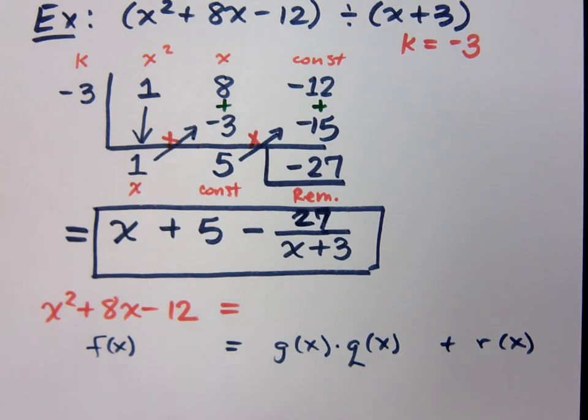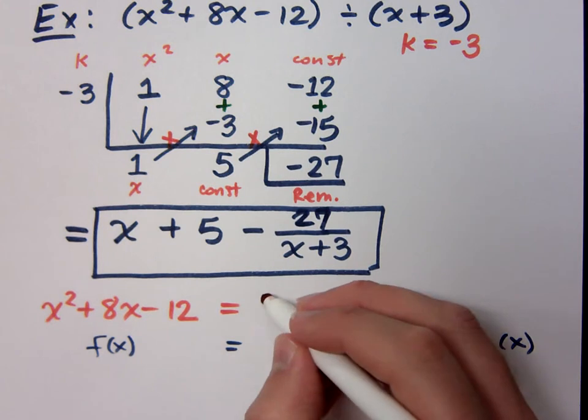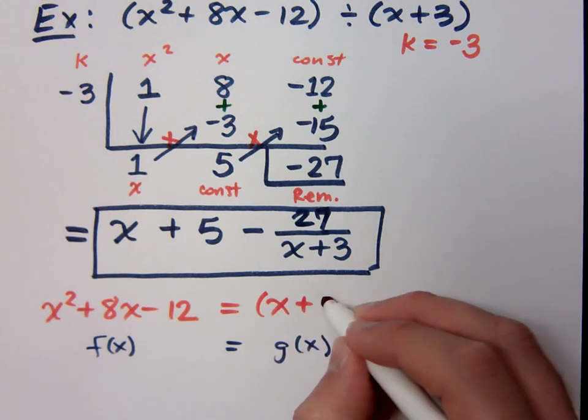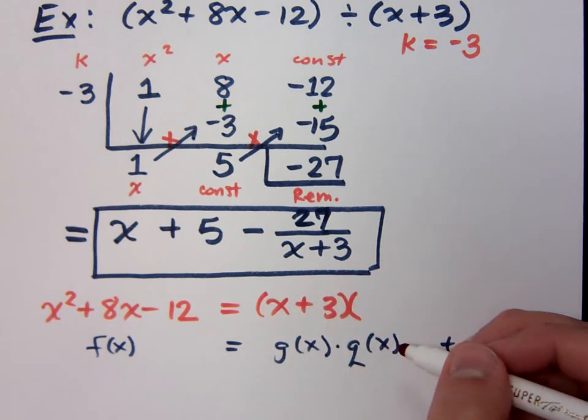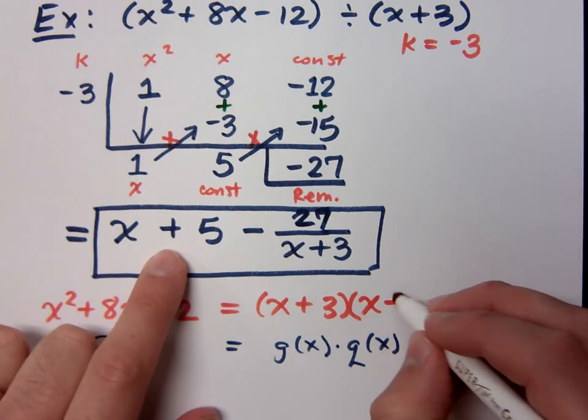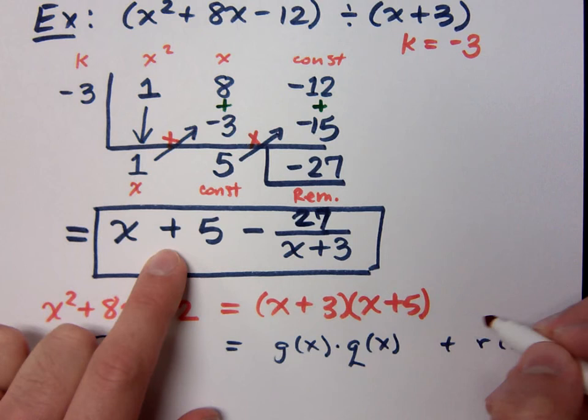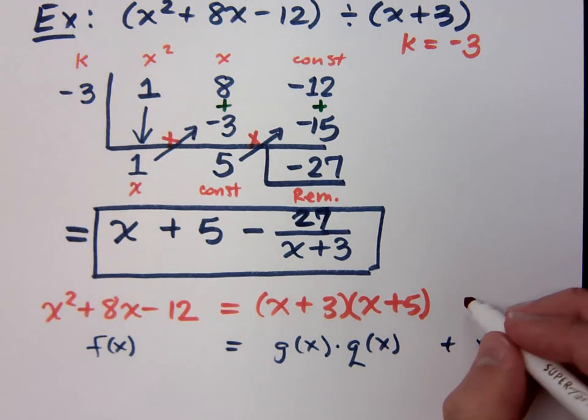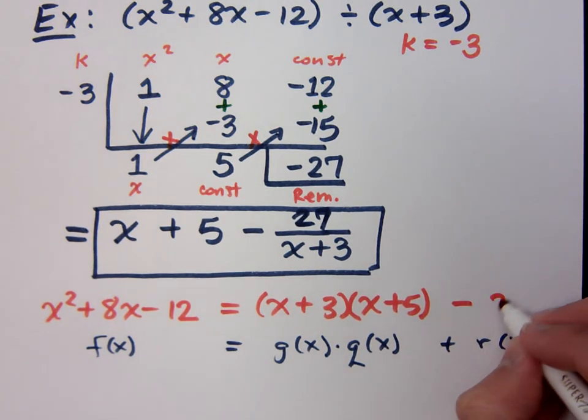So, this is basically my function of x, and it's supposed to equal my g(x) times my quotient plus my remainder. So, my g(x) is what you were dividing by. What was I dividing by in this problem? x plus 3. And what was the quotient when I did that division? x plus 5. And then what's your remainder term? Negative 27.